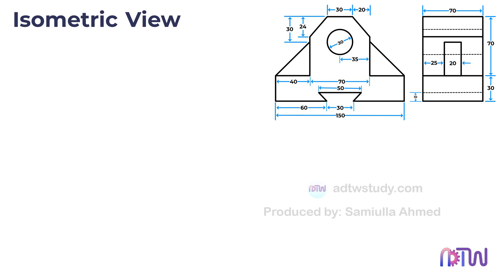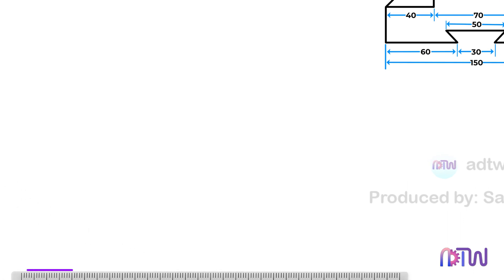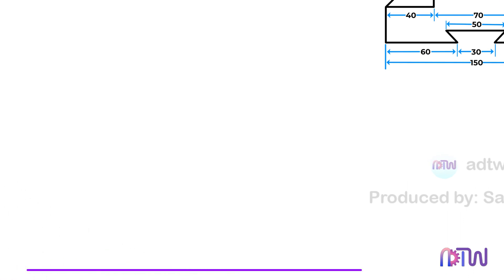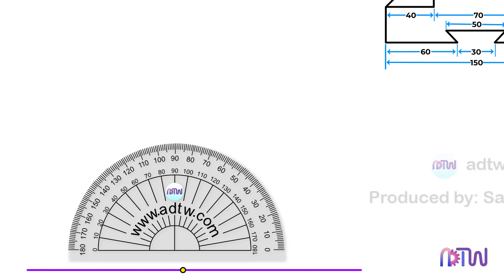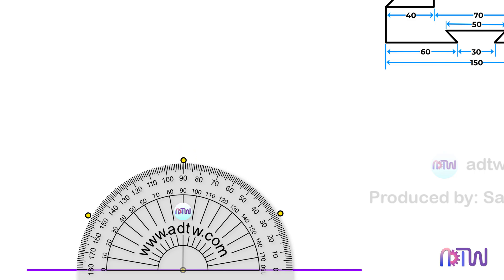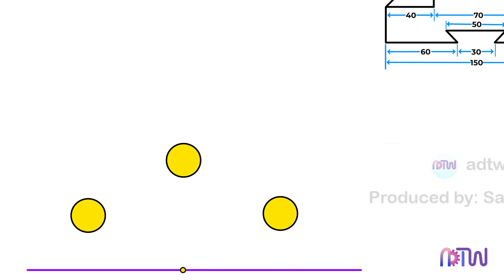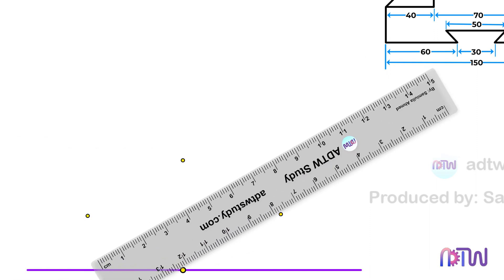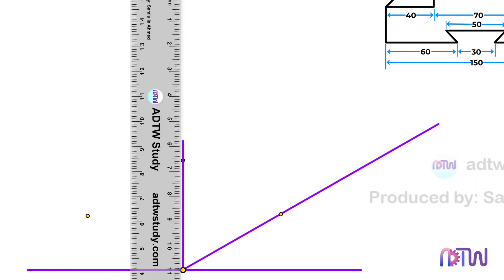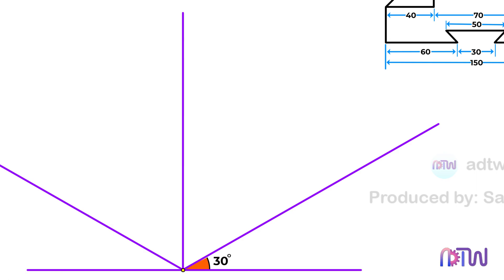We first need to create the isometric axis. Take a ruler and draw a horizontal line, then mark a center point on this line. Next, take a protractor and mark 30 degrees on both sides of the center point as well as 90 degrees. Draw lines passing through these points from the center point. The line through the 30-degree mark is the x-axis, the line through the 90-degree mark is the y-axis, and the remaining line is the z-axis.